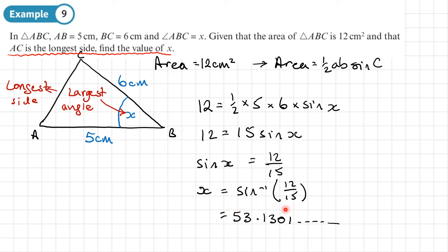if that's the longest side, that means that X here must be the largest angle in that triangle. Now, if this is the largest angle in a triangle, it can't be 53.1 because one of the other angles is going to be obtuse. It's going to be bigger than that. So this is where we've got this ambiguous case. And we need to find the other angle by doing X equals 180 minus this 53.1301.